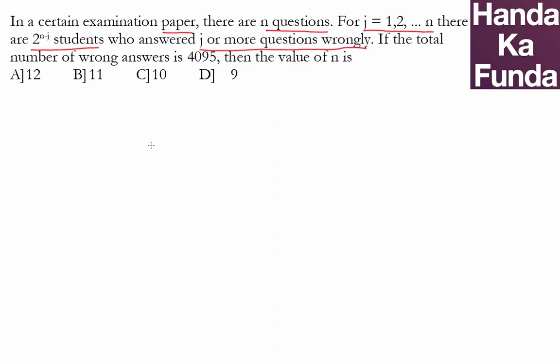This means that 2 to the power of n minus 1 students answered one question wrongly. I am taking the value of j as 1. 2 to the power of n minus 2 students answered 2 questions wrongly.